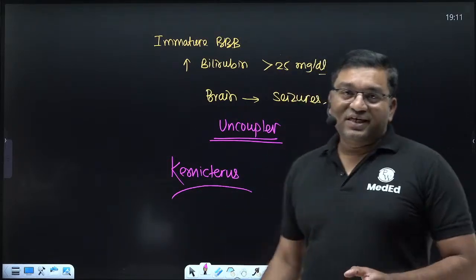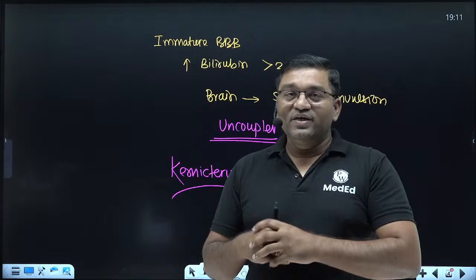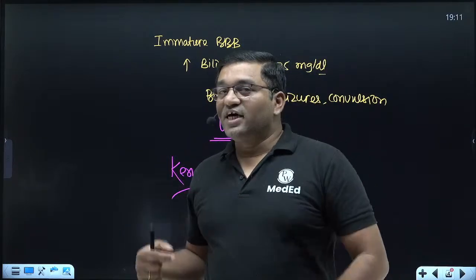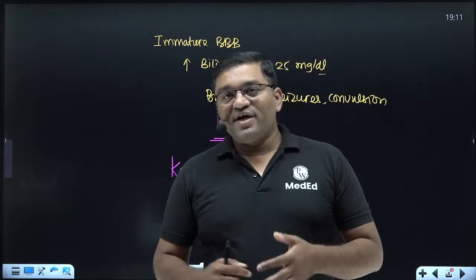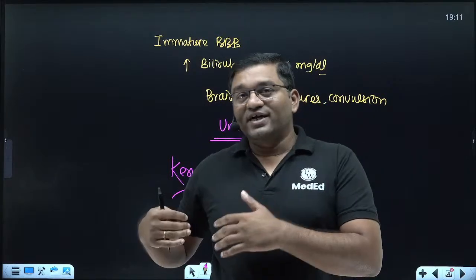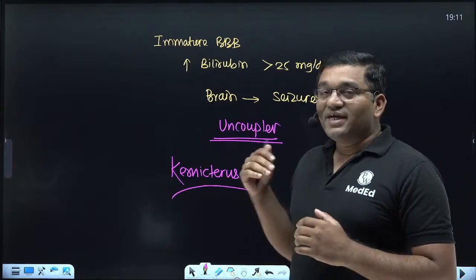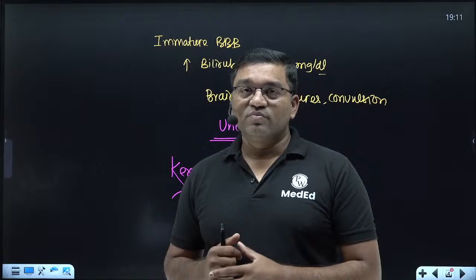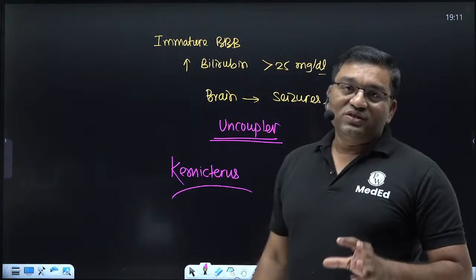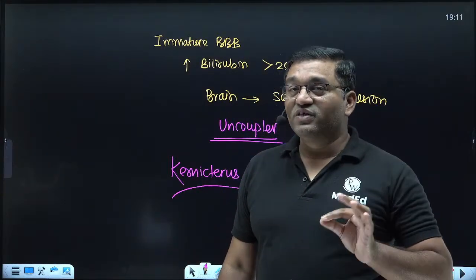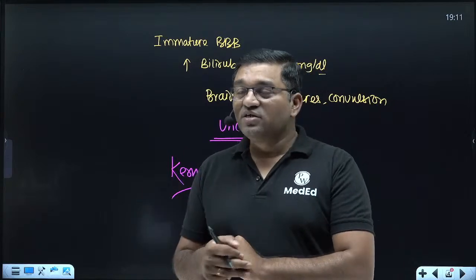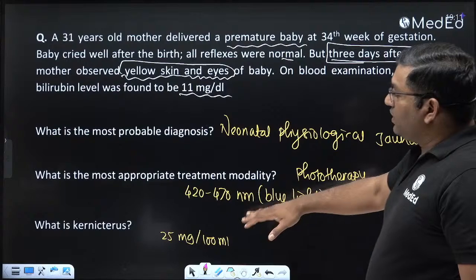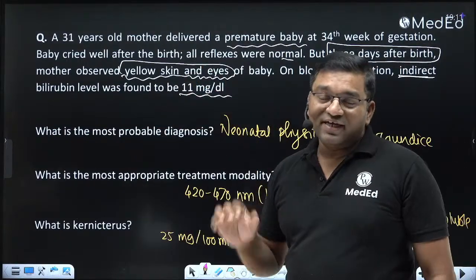There are other congenital causes of increased bilirubin level. For indirect hyperbilirubinemia: Crigler-Najjar syndrome type 1 and type 2, and Gilbert syndrome. For direct hyperbilirubinemia: Dubin-Johnson syndrome and Rotor syndrome. However, neonatal physiological jaundice is the most frequently asked question in the university examination. Sub-questions include the mechanism of phototherapy, what is kernicterus, and what is the probable diagnosis.